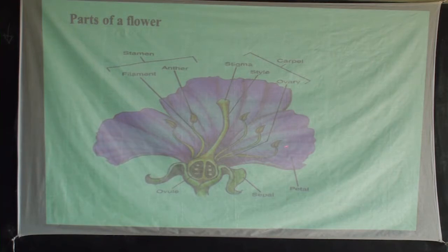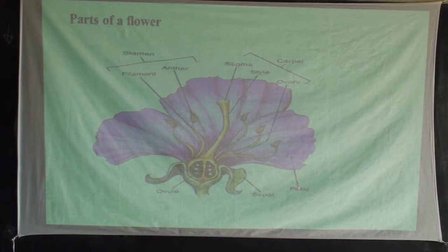Then we go to other parts: we have the petal, we have the sepal. These are the many parts of a flower.